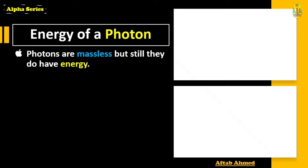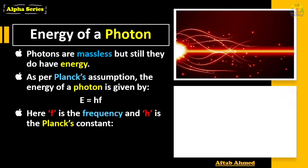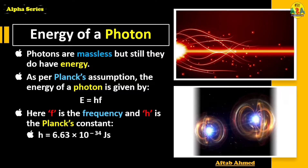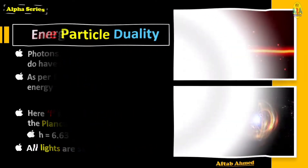Although photons are massless, they still have energy. As per Planck's assumption, the energy of a photon is directly proportional to its frequency and is given by E = hf, where f is the frequency and h is Planck's constant, with a value of 6.63 × 10⁻³⁴ joule-seconds. Notably, the units and dimensions of Planck's constant are the same as those of angular momentum.